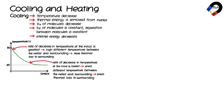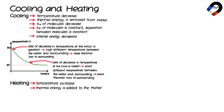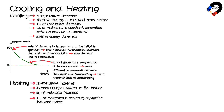Heating processes: heating occurs when the temperature of matter increases, causing thermal energy to be added to the matter. This causes kinetic energy of molecules to increase, while potential energy of molecules remains constant, or increases slightly due to expansion, because the separation between molecules also remains constant, or increases slightly due to expansion.